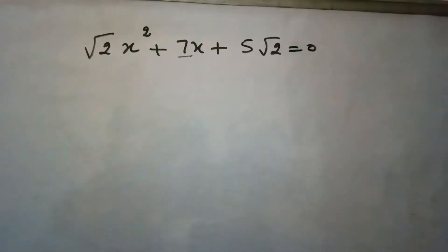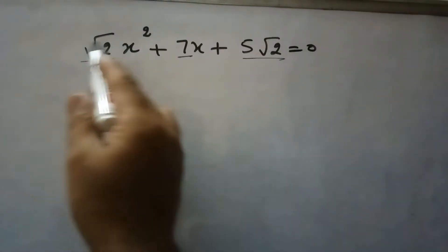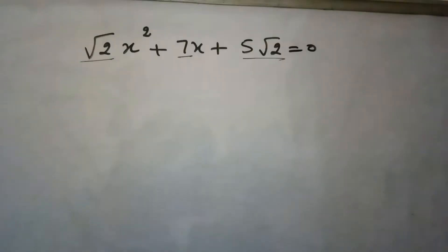Where the sum should be 7 and product should be the product of the coefficient of x square and constant term. If we multiply these two, the product should be 10.